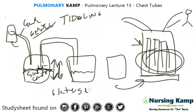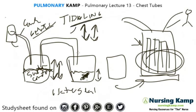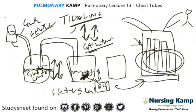The next chamber is the water seal chamber. I think of a seal living in here — that's how I remember it. A seal is a mammal that goes up and down, so in the water seal chamber you will see titling, going up and down. You should see fluctuating and titling. What you shouldn't see is continuous bubbling. A seal might let out some bubbles every once in a while — that's called intermittent bubbling — but not continuous.